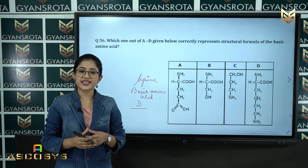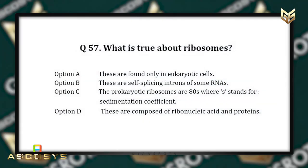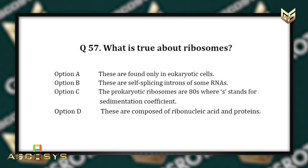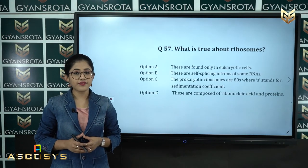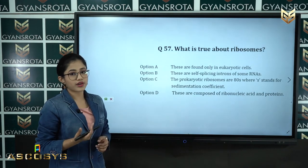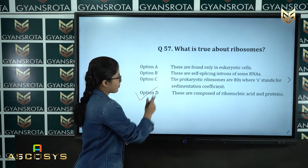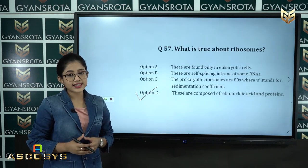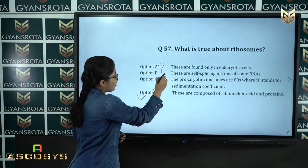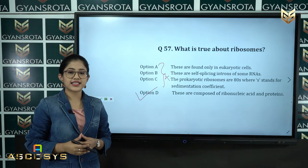Question 57: What is true about ribosomes? Option A: Found only in eukaryotic cells. Option B: These are self-splicing introns of some RNAs. Option C: Prokaryotic ribosomes are 80S, where S stands for sedimentation coefficient. Option D: Composed of ribonucleic acid and proteins. From the chapter Cell: The Unit of Life, the correct answer is option D — ribosomes are composed of ribonucleic acid and protein.